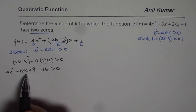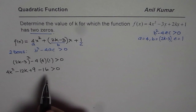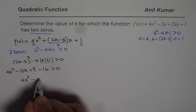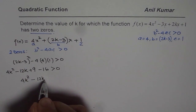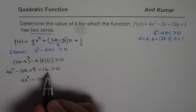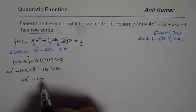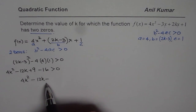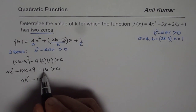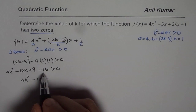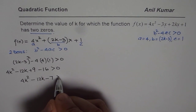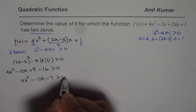Now we can combine the constants. So we get 4k squared minus 12k, and 9 minus 16 gives us negative 7. So we have 4k squared minus 12k minus 7 is greater than 0.